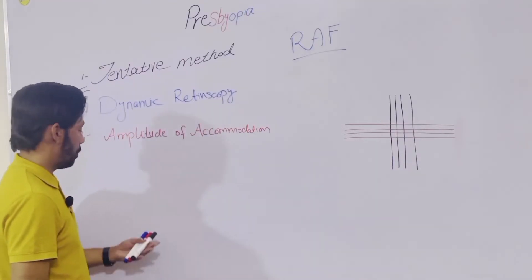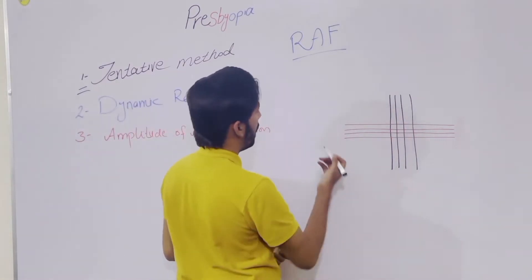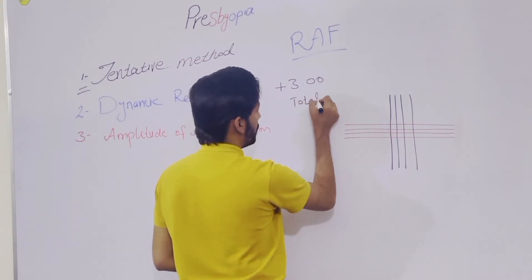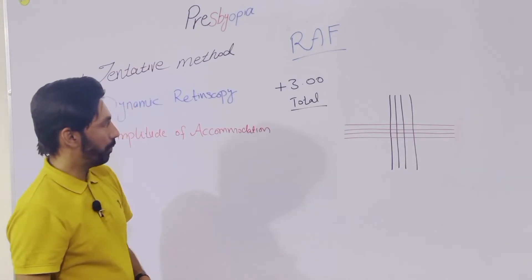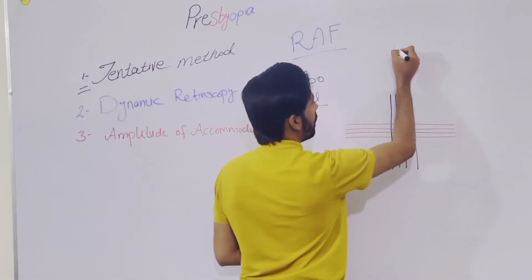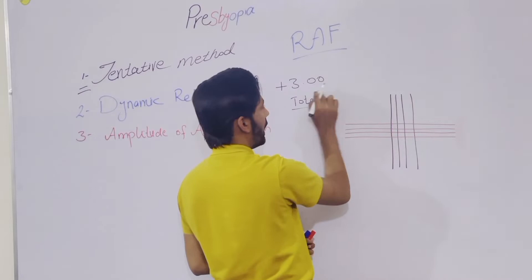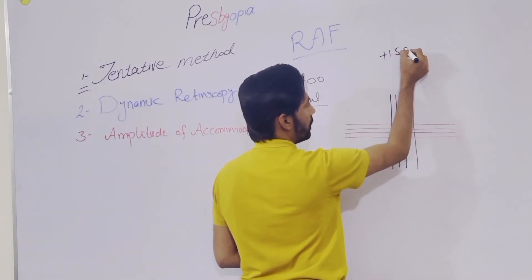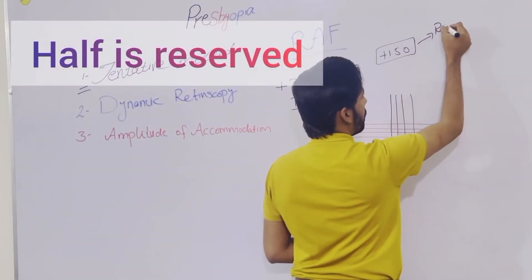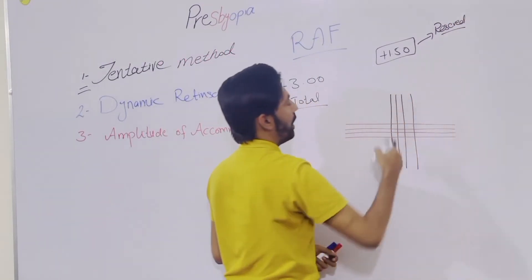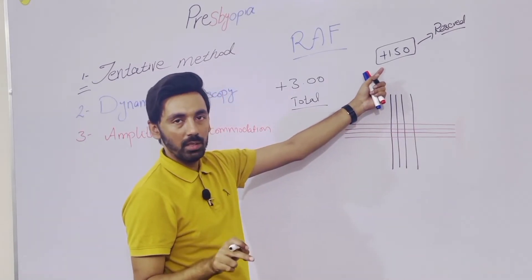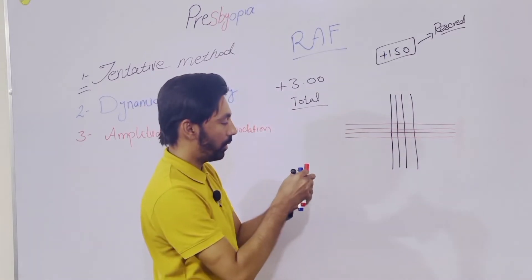For example, with the help of the RAF Rule, we find that plus 3 is our amplitude of accommodation — the total amplitude of accommodation. Half of that total amplitude of accommodation is plus 1.5. That half of the amplitude of accommodation is a reserved value — this 1.5 is reserved in the eye and is not going to be used in the near add or in the presbyopic correction.